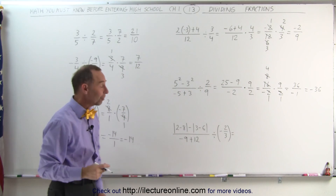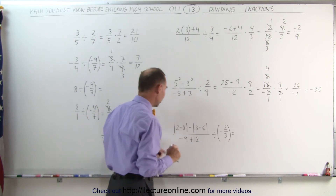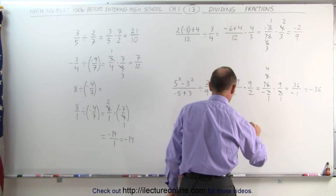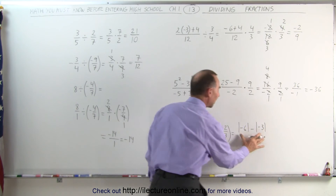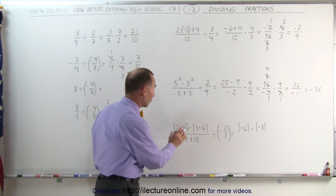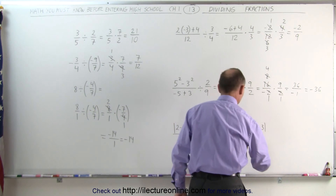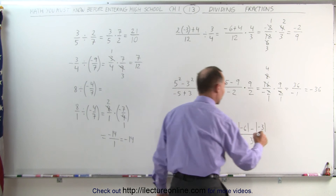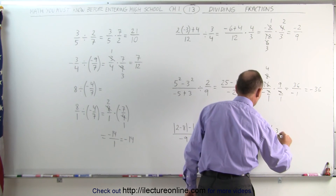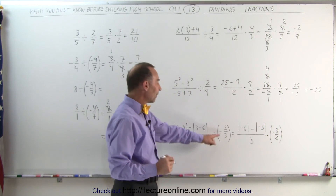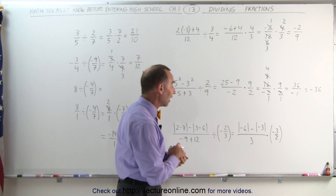Here, notice we have absolute value signs to take care of first. We work out what's inside them: 2 minus 8 becomes negative 6, and minus 3 minus 6 gives negative 3 — keeping the absolute value signs in place while simplifying inside. Divide by negative 9 plus 12, which is divide by positive 3. Dividing by a fraction is the same as multiplying by its inverse, so we multiply by negative 3 over 2. I kept the negative sign because I don't yet know the final sign.